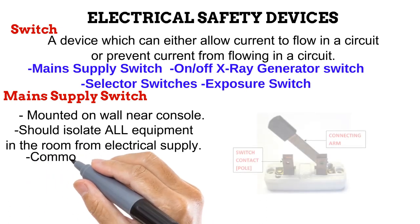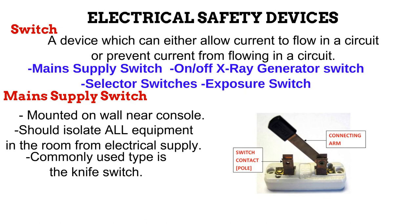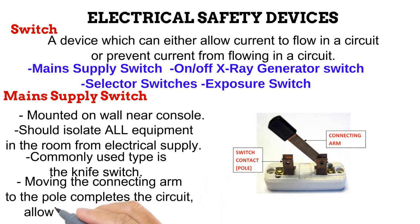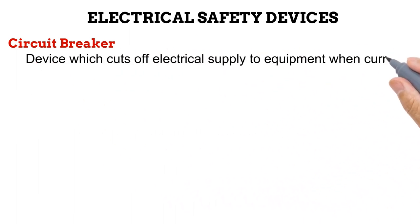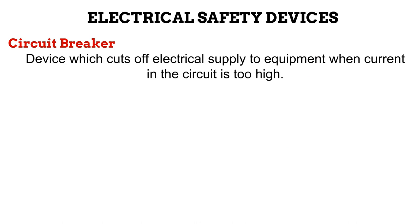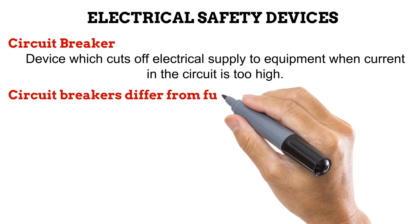The main supply switch is usually in the form of a knife switch, made of a connecting arm and a switch contact also known as a pole. To allow electricity to flow, you close the circuit by moving the connecting arm into the pole. On the diagram, the circuit is open, which prevents electricity from flowing. Next is the circuit breaker, which cuts off electrical supply to equipment when the current in the circuit is too high. Even though the circuit breaker and the fuse are similar in what they do, there are differences.